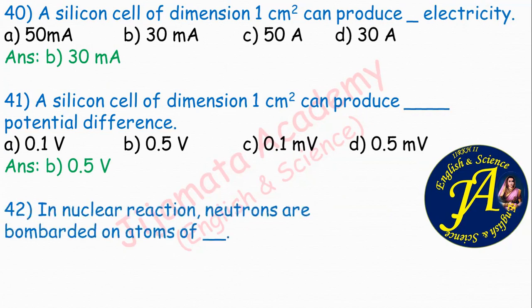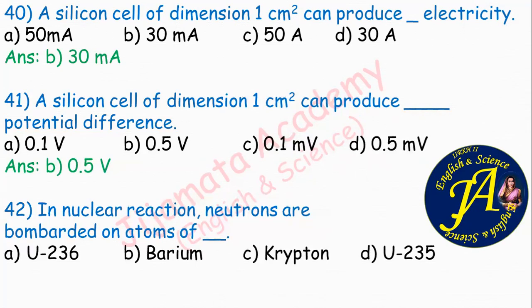In nuclear reaction, neutrons are bombarded on the atom of dash. Options are uranium-236, barium, krypton, uranium-235. Correct answer is option D: uranium-235. We bombard neutrons on uranium-235; it becomes uranium-236, and as a result of nuclear fission, barium and krypton are formed.